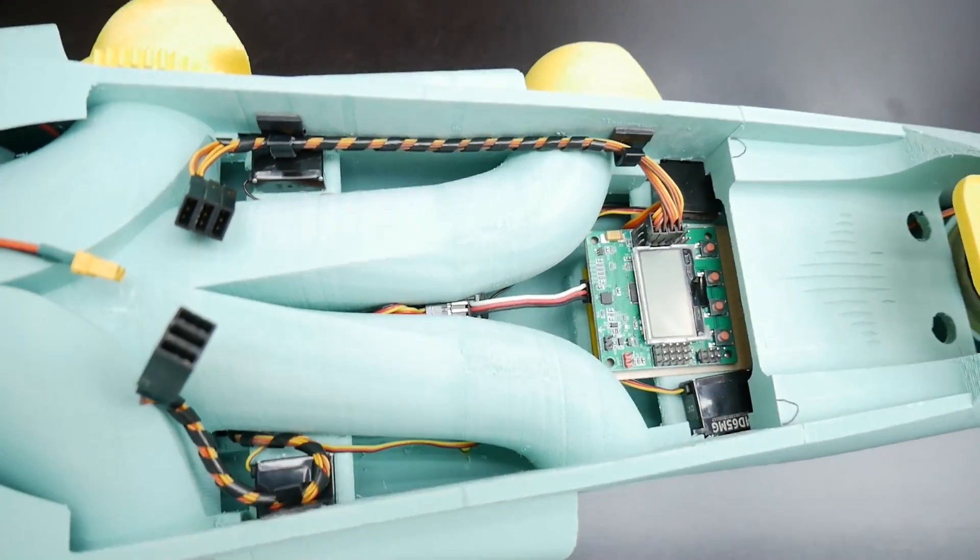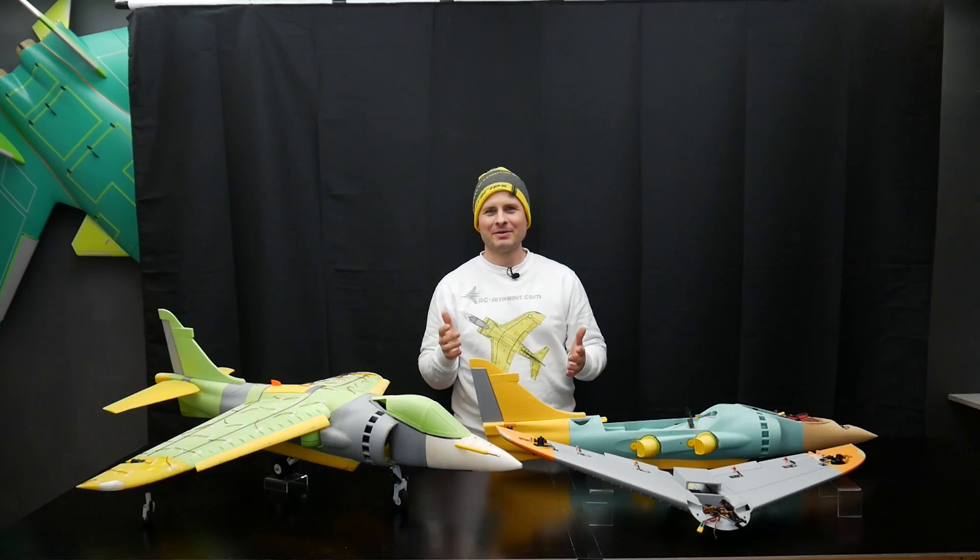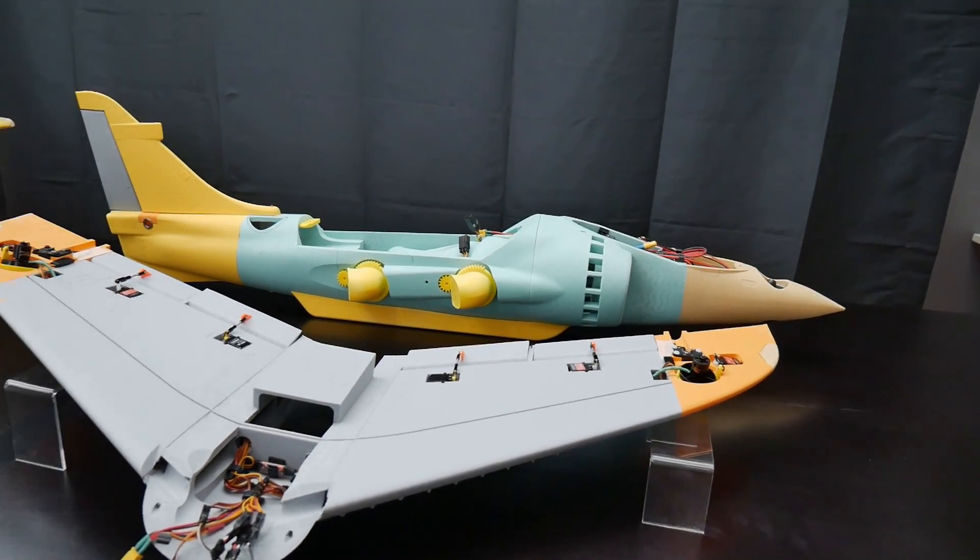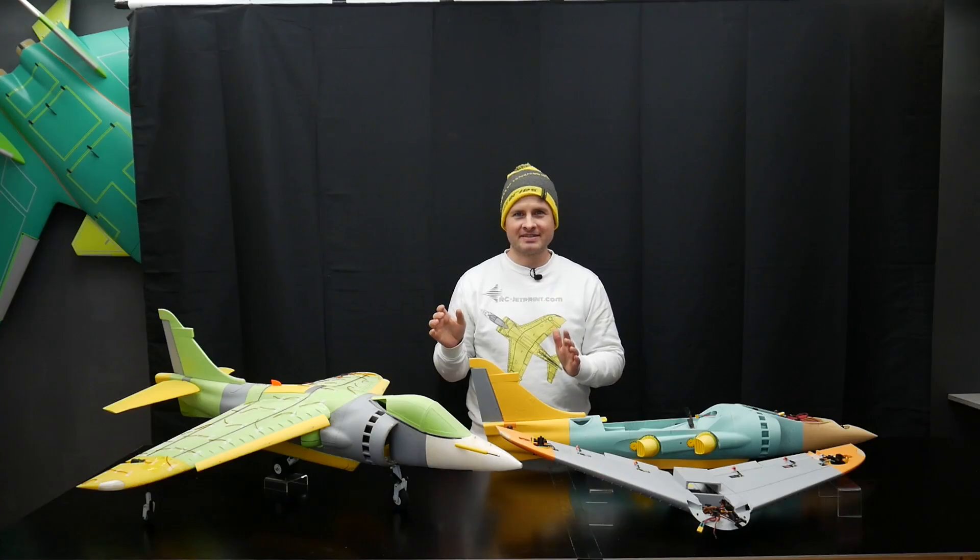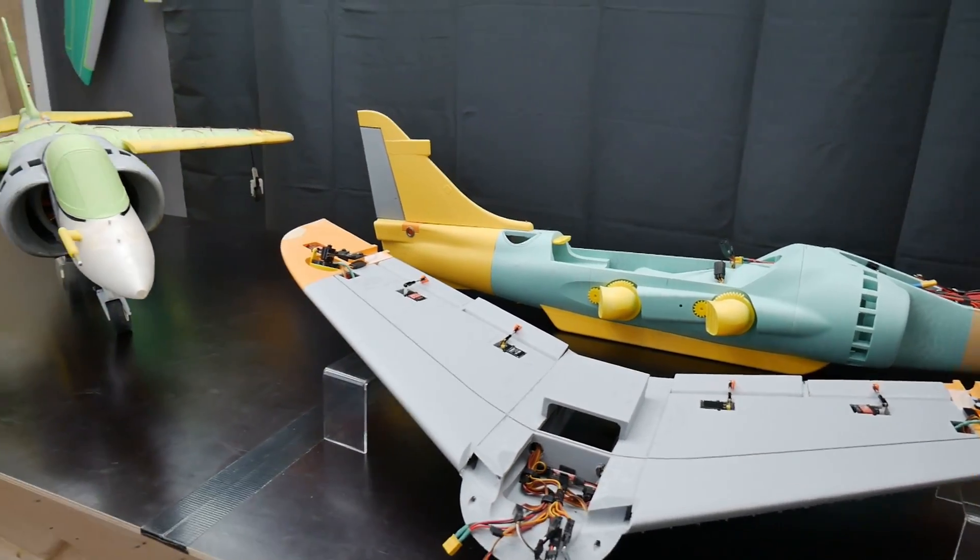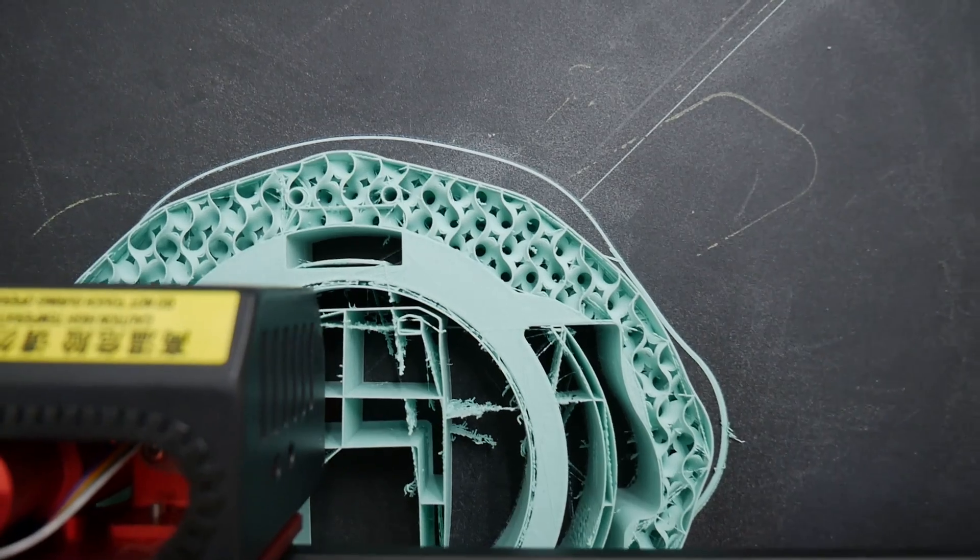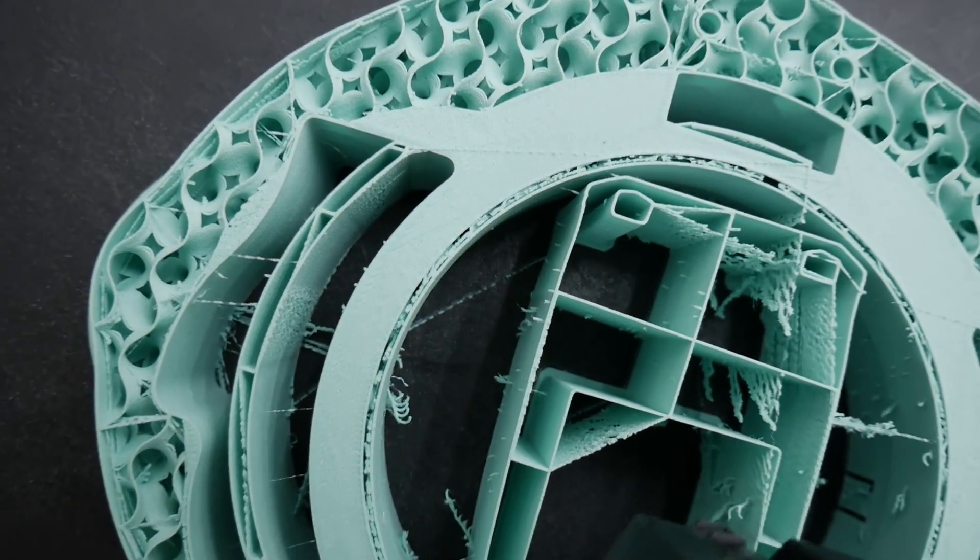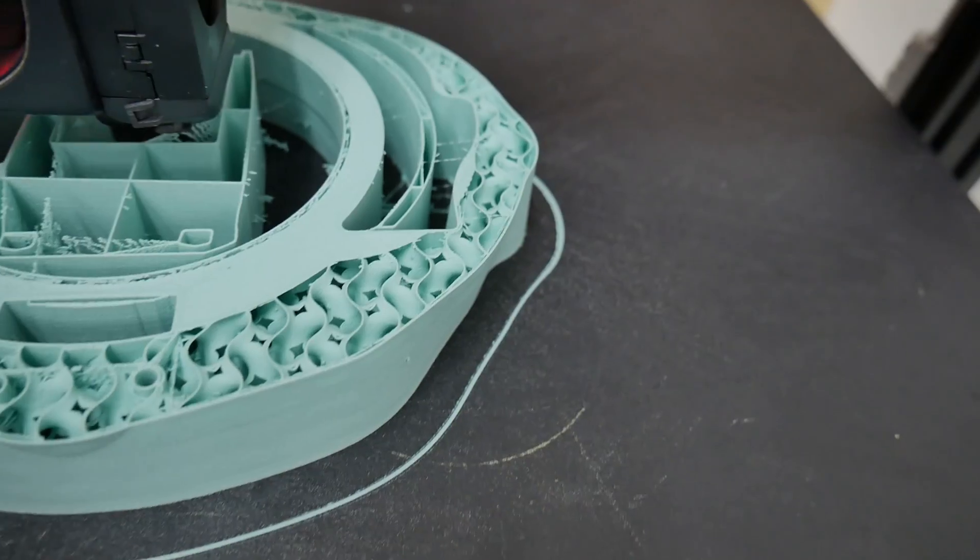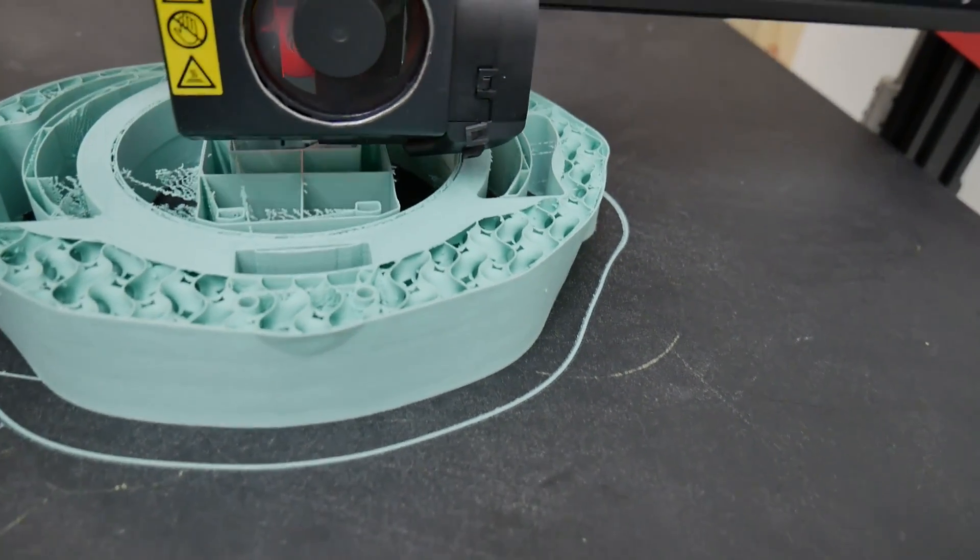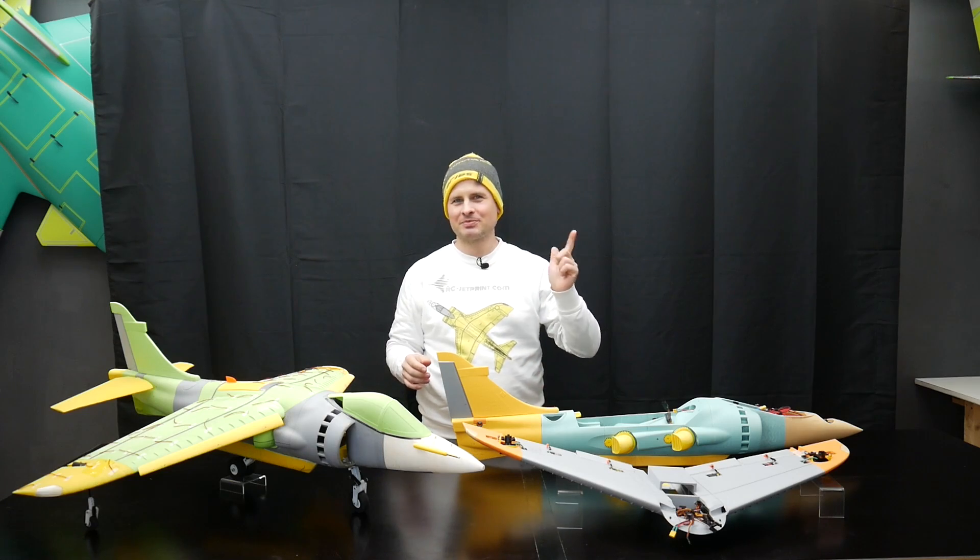Later on we will test also other flight controllers. The Harrier is in the final stage. I think we need about two weeks for last modifications that are necessary to put in all this technique. Right over there the printers are running to print the final VTOL version. In about two weeks I think all the files are ready and we will upload them on rcjetprint.com.